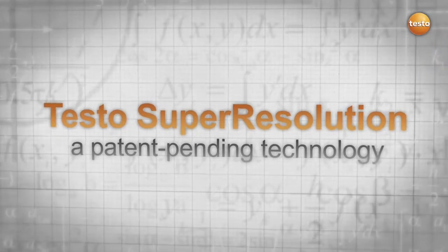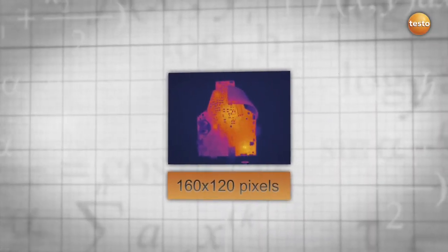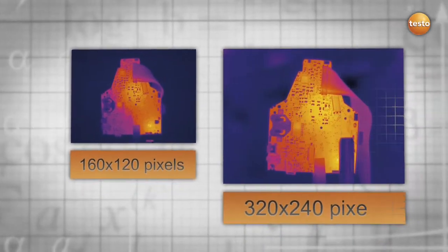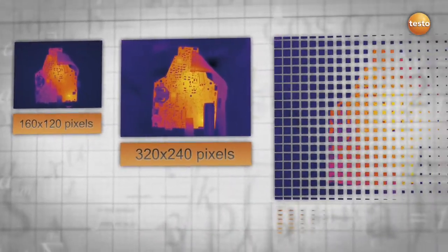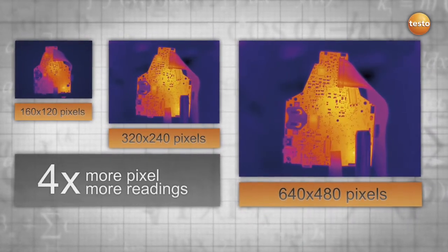The patent-pending Testo Super Resolution technology provides you with four times more readings, which results in a much more detailed thermal image. It makes the image quality of your Testo thermal imager a cut above the rest, with four times as many pixels and a more detailed picture.